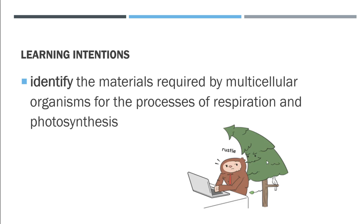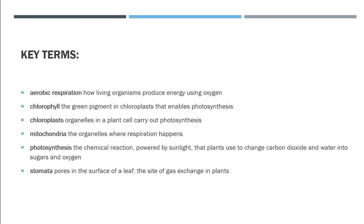Our learning intentions for today are to be able to identify the materials required by multicellular organisms for the processes of respiration and photosynthesis. So we want to identify what's required for these things to work. We've got some key terms — I'll let you look at those at your own leisure, but we will be talking about all of these to some degree. I've left out chlorophyll, but everything else we talk about a little bit. Later in the year we'll talk more about the plant stuff. What we really want to focus on today is just photosynthesis and respiration.